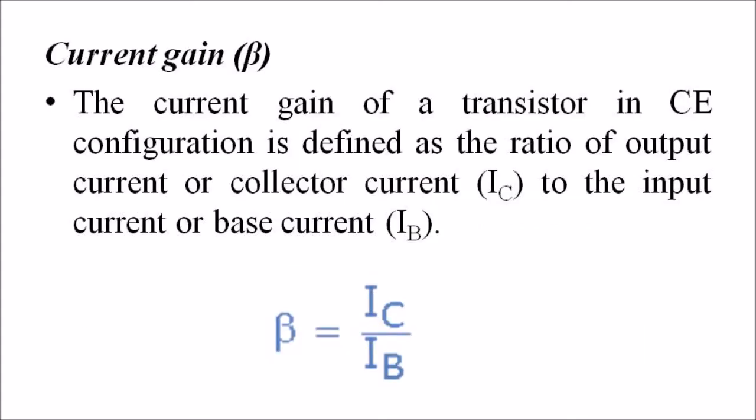When it comes to current gain, it is represented by beta. The current gain of a transistor in CE configuration is defined as the ratio of output current (collector current IC) to input current (base current IB): beta = IC / IB. The current gain in CE configuration is high. Therefore, the transistor in CE configuration is used for amplifying current.